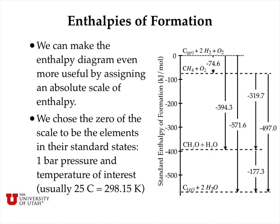Methane plus oxygen lies 74.6 kJ per mole lower in energy, and formaldehyde and water lie 394.3 kJ per mole lower than the elements, but only 319.7 kJ per mole lower than methane plus oxygen. On the right-hand side of this diagram, we can see the same energy differences as before between the three different combinations we originally considered. Now that we've put this on an absolute scale with the elements at the top defining the zero of energy, we can write the energies in terms of the standard enthalpy of formation.